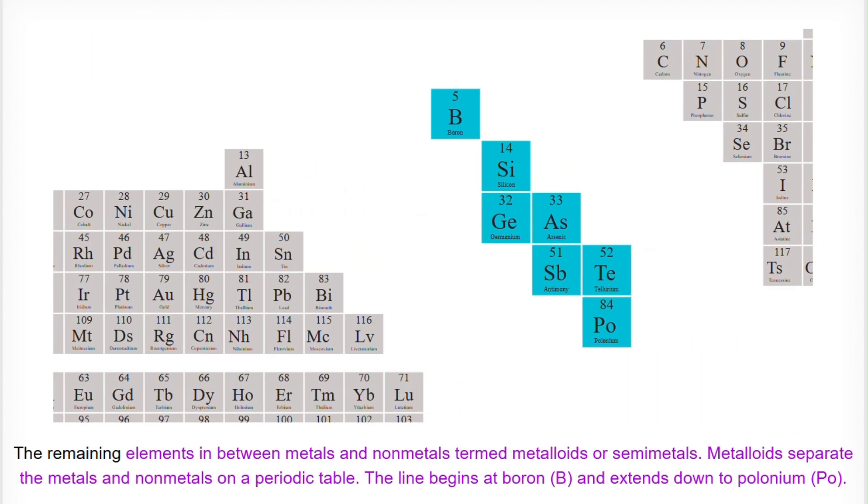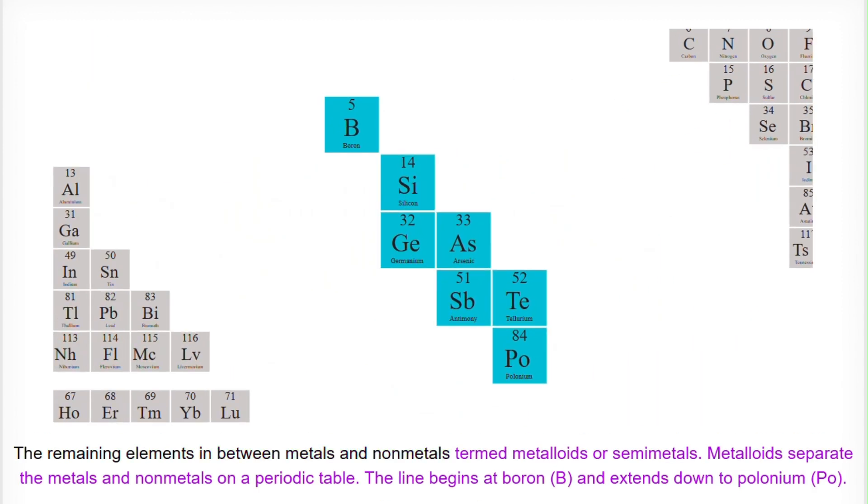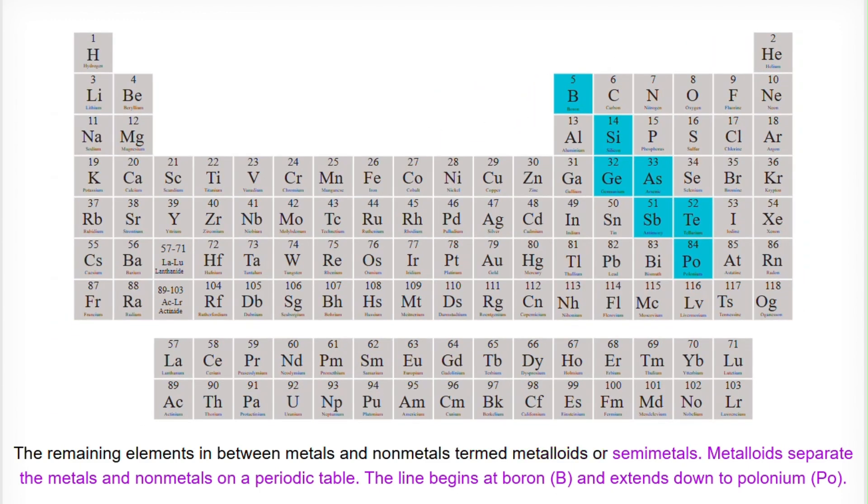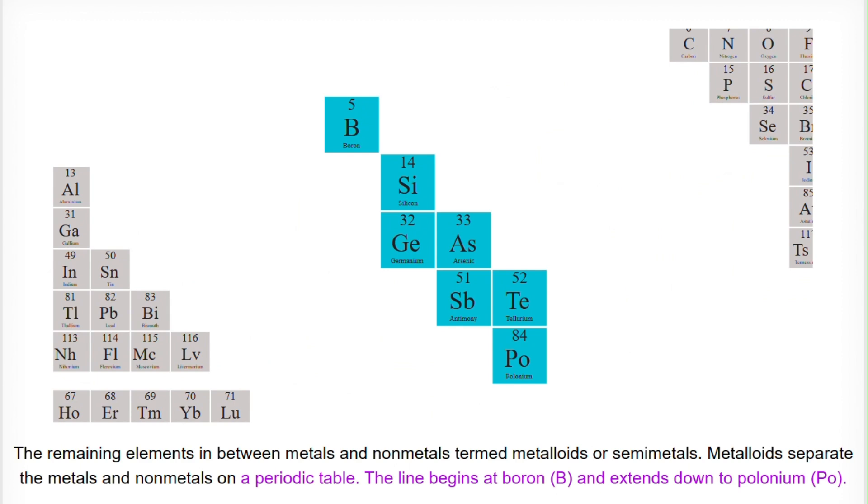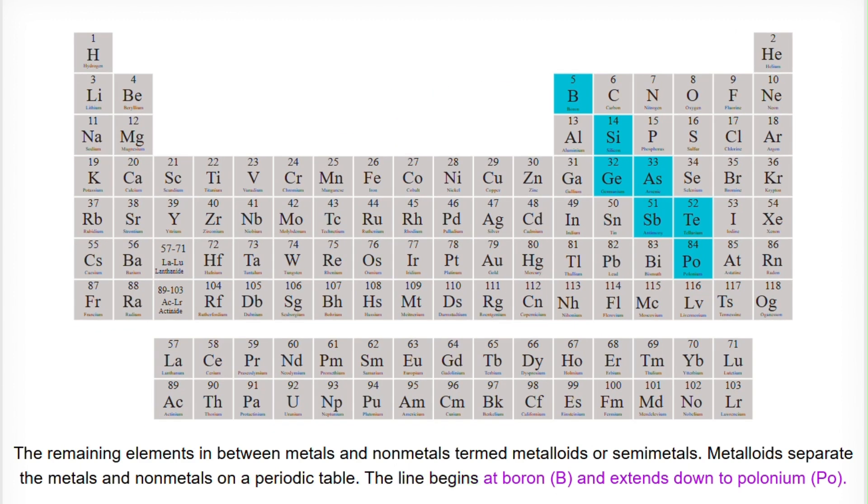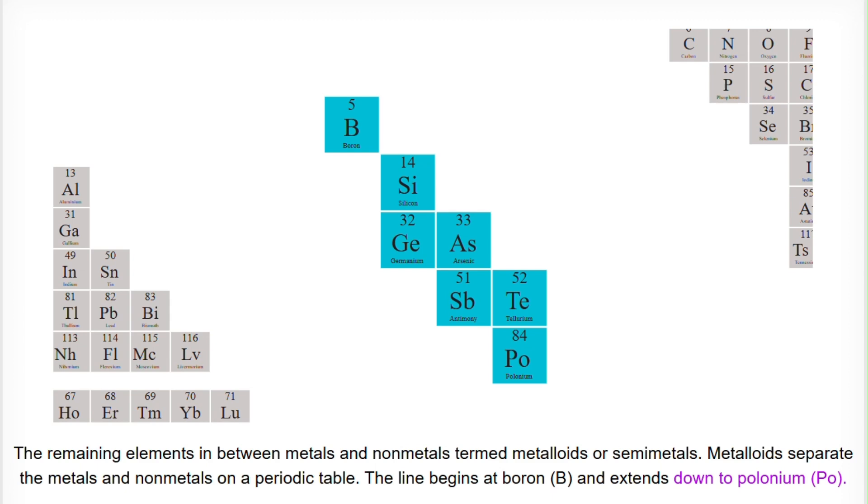The remaining elements in between metals and non-metals are termed metalloids or semi-metals. Metalloids separate the metals and non-metals on a periodic table. The line begins at boron B and extends down to polonium Po.